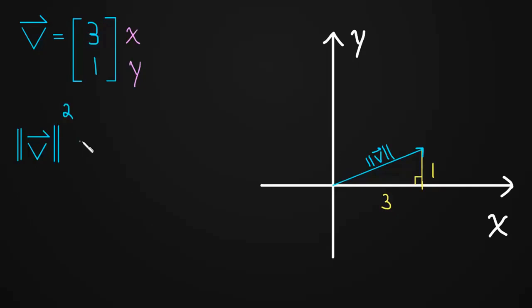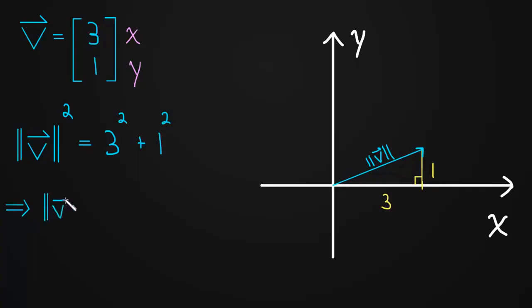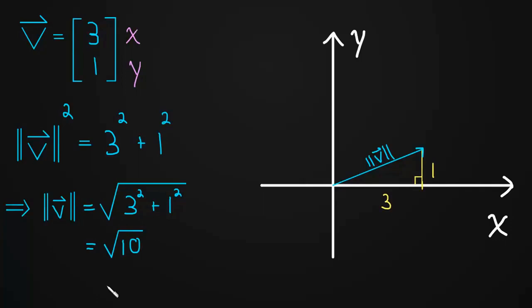So we can just use the Pythagorean theorem. The length of V squared equals 3 squared plus 1 squared — a direct application of the Pythagorean theorem. Taking the square root of both sides, the length of V equals the square root of 3 squared plus 1 squared, which simplifies to the square root of 10. All we're doing is finding the hypotenuse of a right triangle using the Pythagorean theorem.